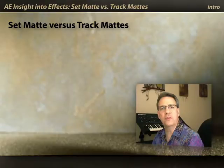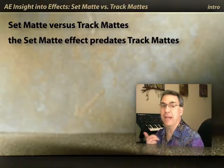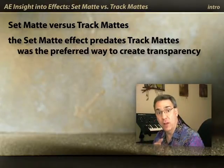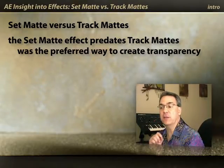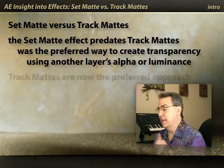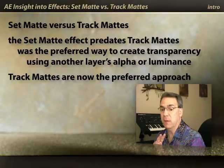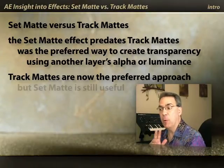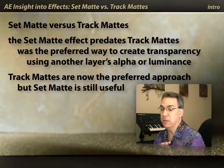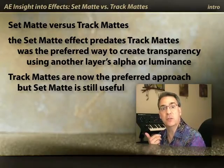Set Matte is one of the oldest effects in After Effects. It's been there even before After Effects had track mattes — it was the only way to create transparency on one layer based on the luminance or alpha channel of another layer. Now, the addition of the track matte feature has made Set Matte largely obsolete. However, there are still cases where track mattes are better and cases when Set Matte is better. Let's do a quick pro and con so you can see which works best for which situation.